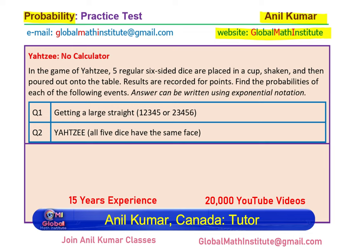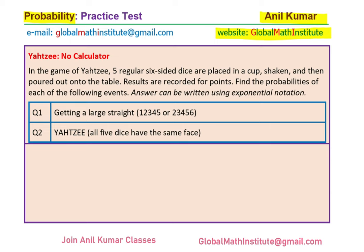It is based on probability. The question here is: in the game of Yahtzee, five regular six-sided dice are placed in a cup, shaken and then poured onto a table. Results are recorded for points. Find the probabilities of each of the following events. The answer can be written using exponential notation since calculators are not allowed.